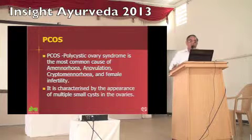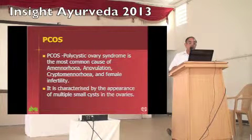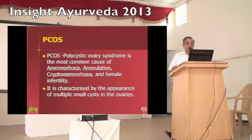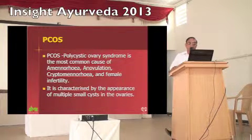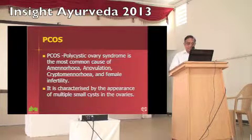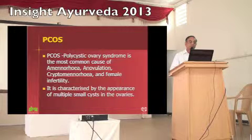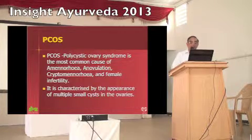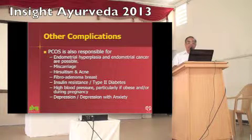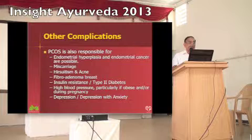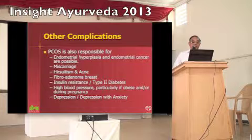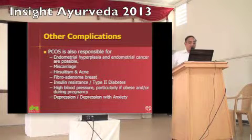Polycystic ovarian syndrome is one of the most common causes of menstrual disorders like amenorrhea, anovulation, cryptomenorrhea, and female infertility. It is categorized by the appearance of multiple small cysts in the ovaries. It is also associated with a number of complications including endometrial hyperplasia, endometrial cancer, miscarriage, hirsutism, and acne.